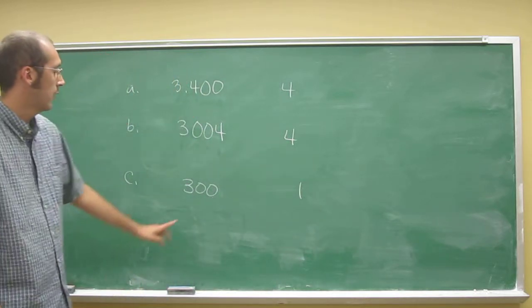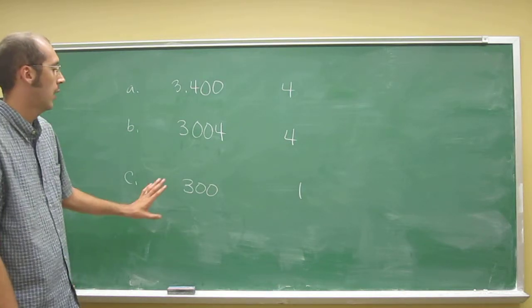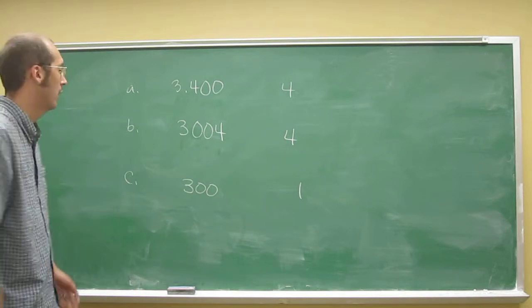So remember, trailing zeros are only significant if there's a decimal point in that number, if there's not a decimal point in that number.